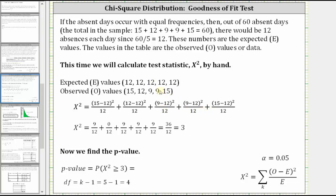again, is the square of 9 minus 12 divided by 12. And the fifth fraction is the square of 15 minus 12 divided by 12. Simplifying each fraction and adding, chi-square is equal to 3.